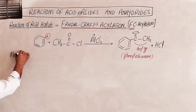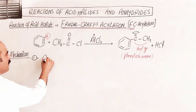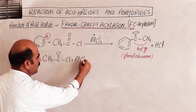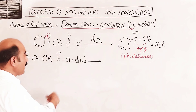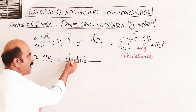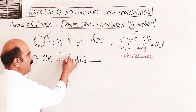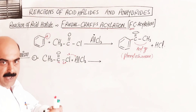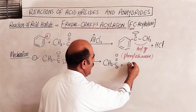Mechanism step number one: formation of the electrophile. The acyl halide reacts with AlCl3. AlCl3 attacks the electronegative carbon-chlorine bond of the acyl halide. The electron-deficient carbon becomes positive, generating an acylium ion: CH3-CO positive, plus AlCl4 negative. Chlorine leaves in the form of a chloride ion bonded to AlCl3.